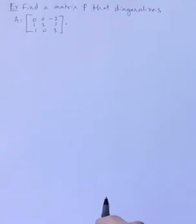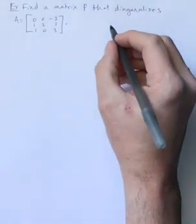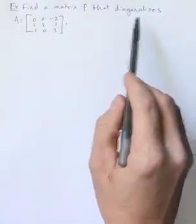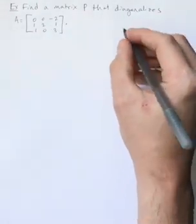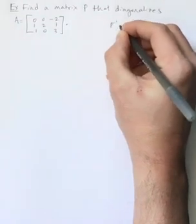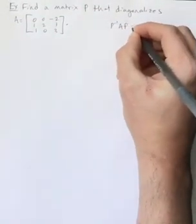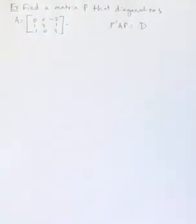Just to remind you what that means, a matrix P that diagonalizes A would be a matrix that when I find P inverse AP, then I end up getting some diagonal matrix. And remember that a diagonal matrix is one that has every entry off of the main diagonal as a 0.